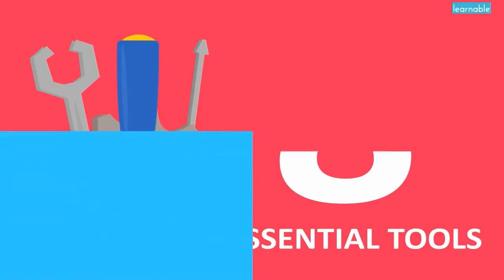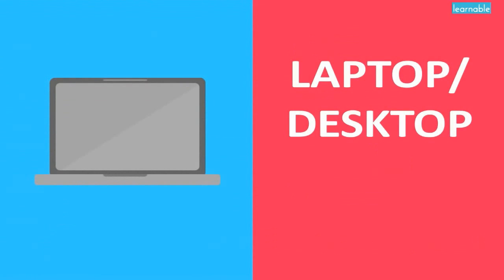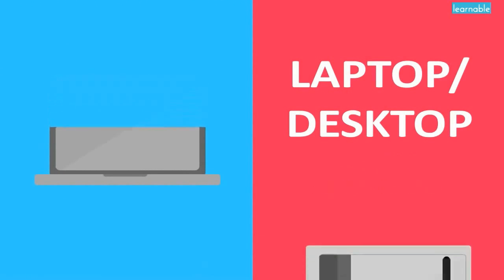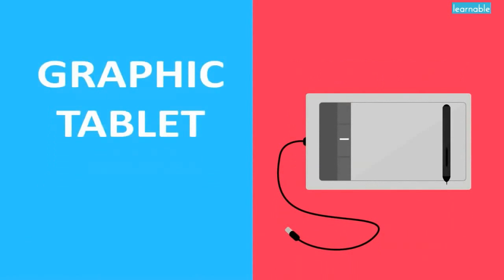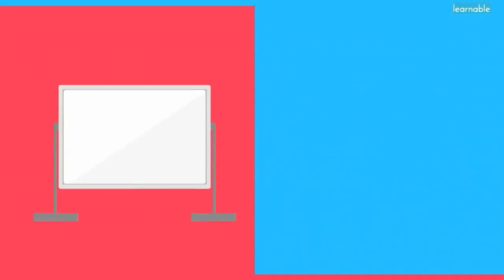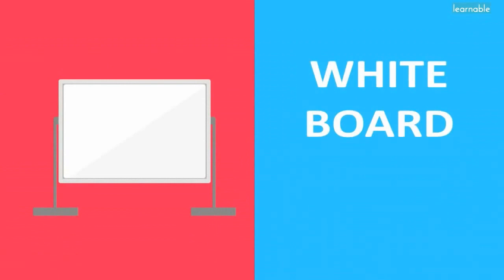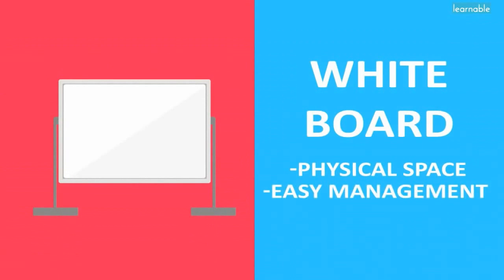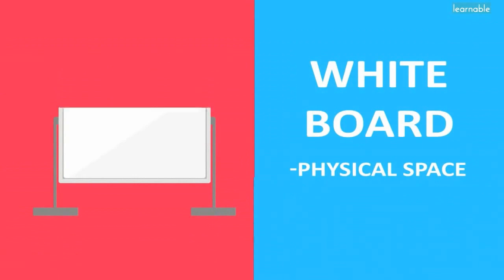First, you need yourself a good computer — this can be a desktop or a laptop, it really doesn't matter, just make sure it's fast and reliable. You'll also want to get yourself a graphic tablet or a mouse, as this will make designing a lot easier and makes everything more precise. Whiteboards or ample wall space is ideal to allow you to physically rearrange and record your thoughts when away from the computer. Notebooks are also beneficial as well.